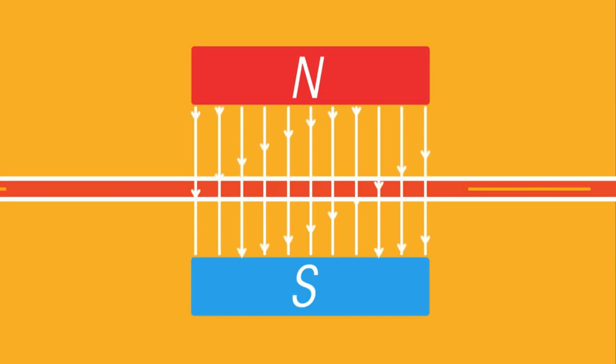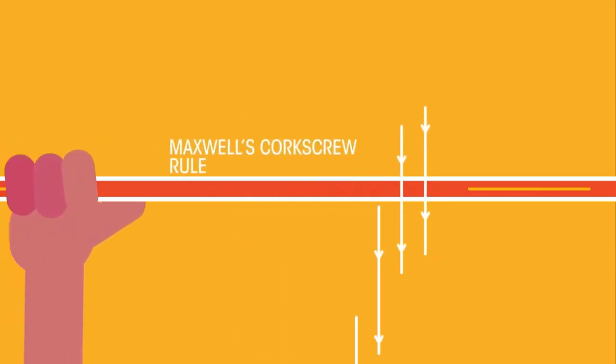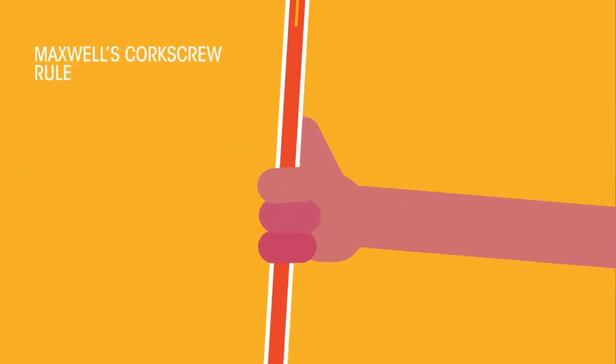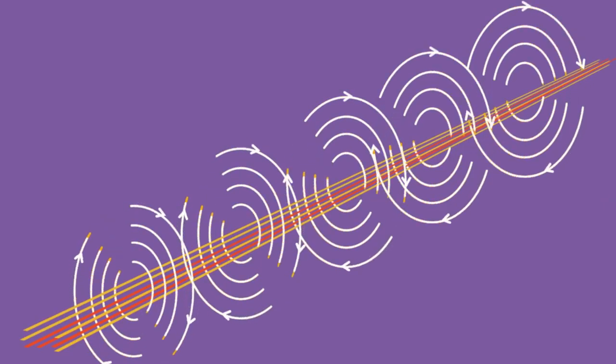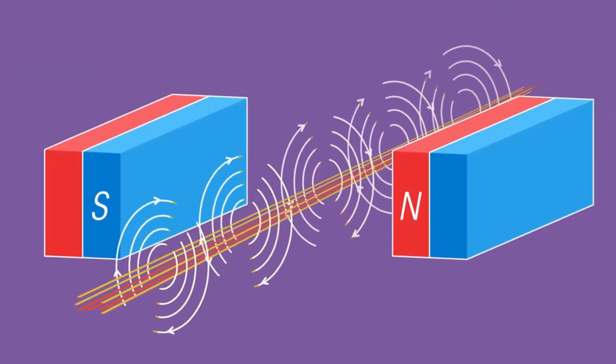The direction of the field can be shown by Maxwell's corkscrew rule. If we add more wires, the resultant magnetic field builds up and becomes stronger. Placing these wires perpendicular to a magnetic field enables us to see how these force lines interact.